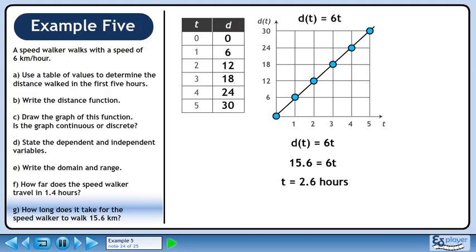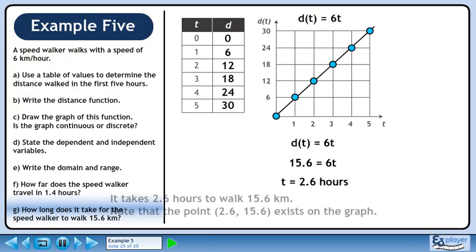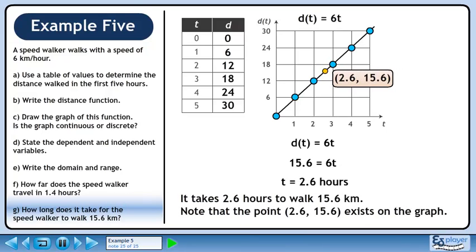Divide both sides by 6 to get 2.6. It takes 2.6 hours to walk 15.6 km. Note that the point exists on the graph.